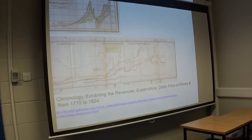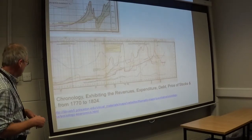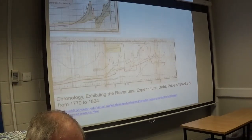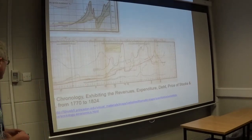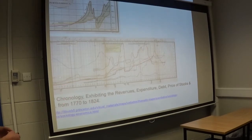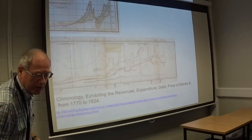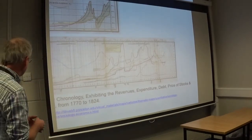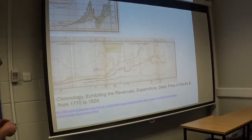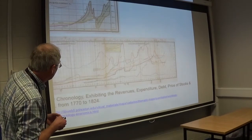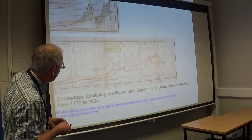This chart here shows a whole set of lines over several years — 1770 to 1824, so about 50 years — covering different prices and different commodities: UK debt, price of stocks, and things like that. The yellow line here is the price of bread over those 50 years. It's difficult to follow when it gets in amongst the others, but we can track it along over the 50 years.